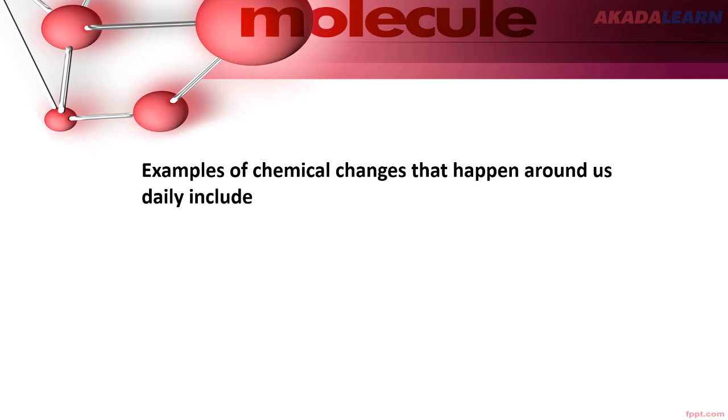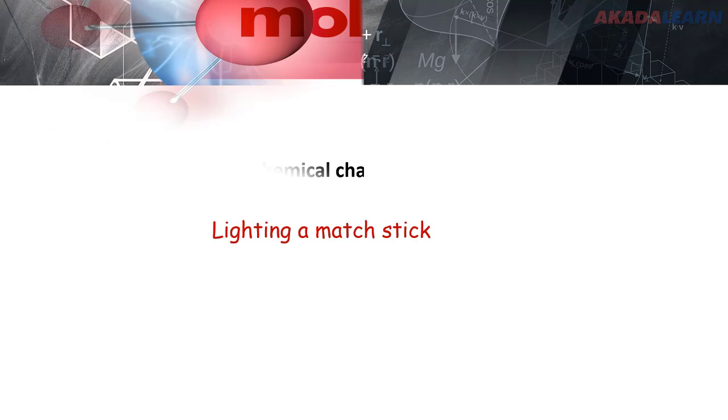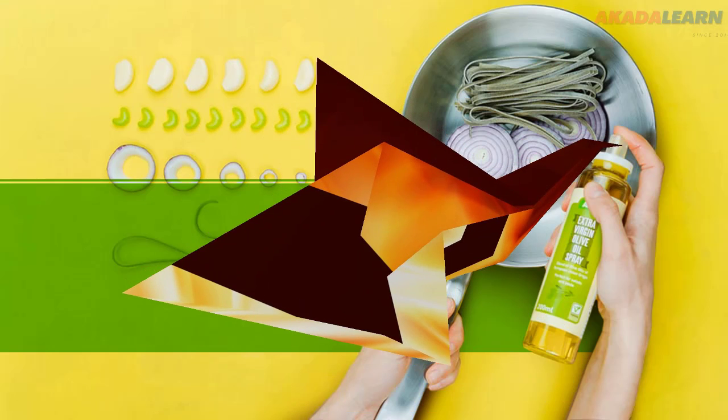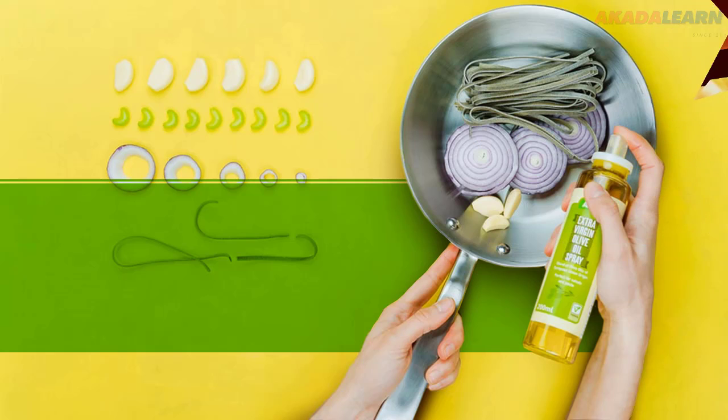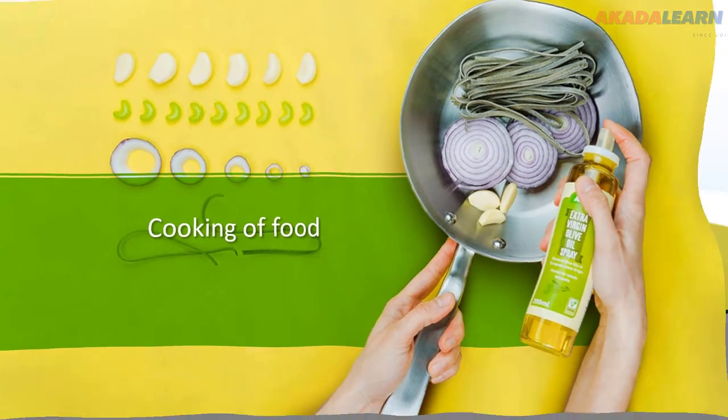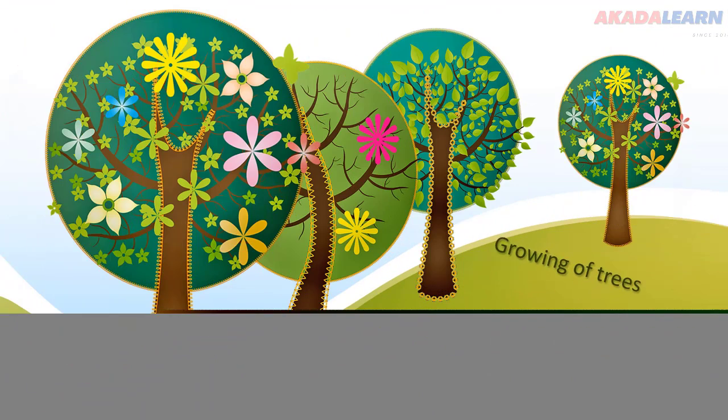Let's take some examples of chemical changes that happen around us daily. Lighting a matchstick, rusting of nails and metals, burning of wood and other materials, cooking of food, and growing of trees.